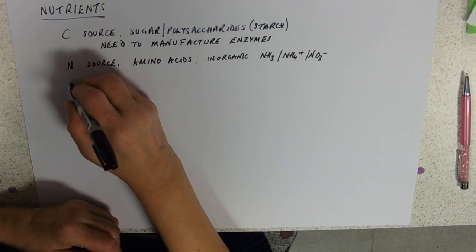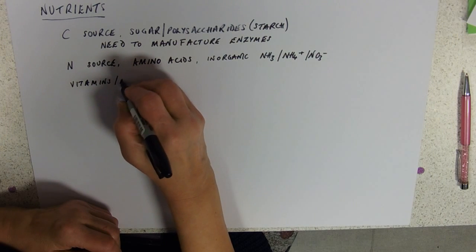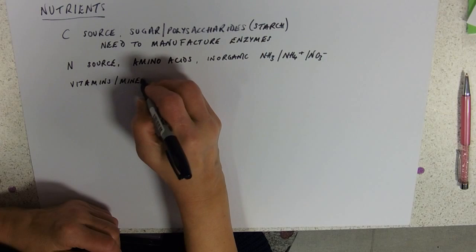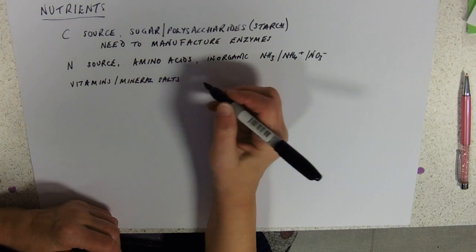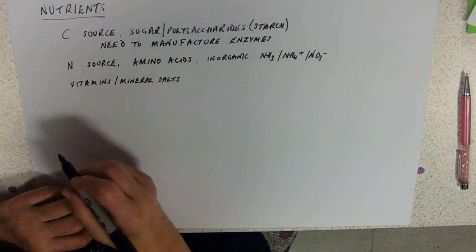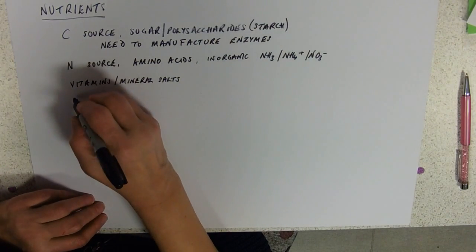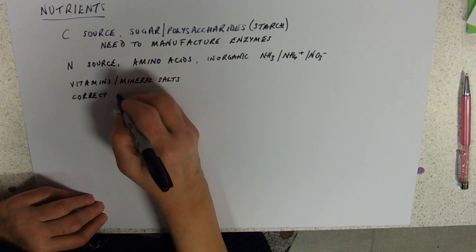They will also need a supply of vitamins and mineral salts. Just like us, they need sodium chloride and they need potassium ions and they need vitamin B, perhaps. And they would need the correct pH.